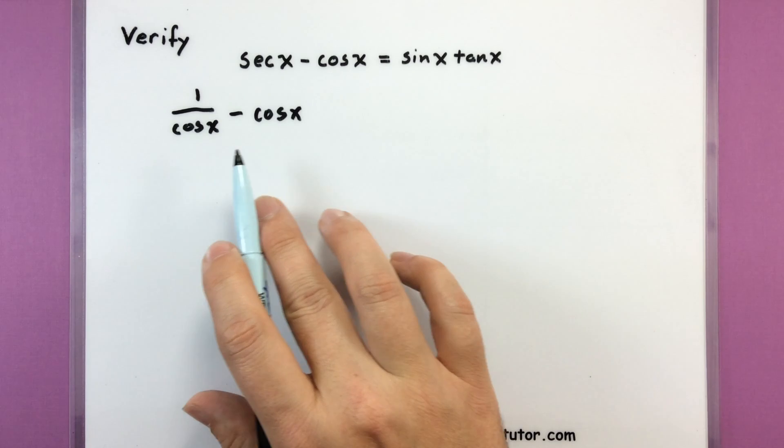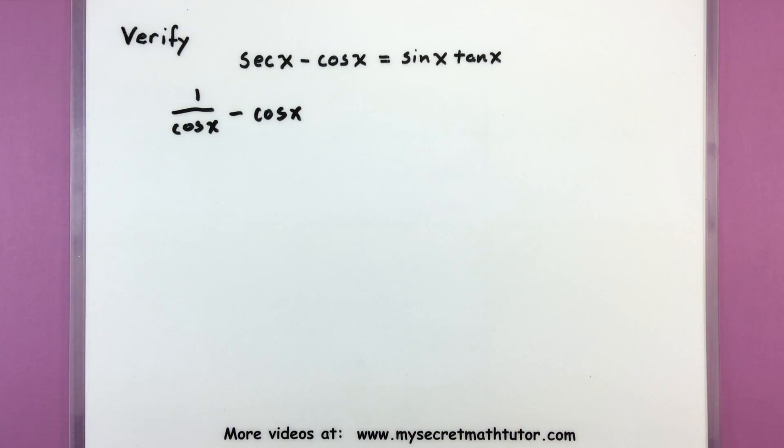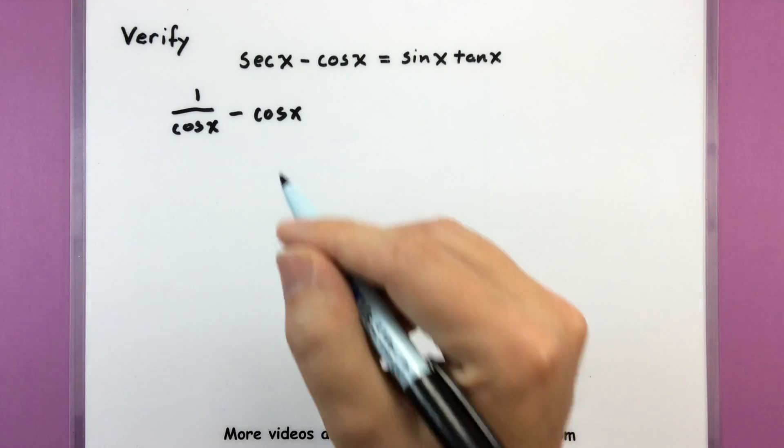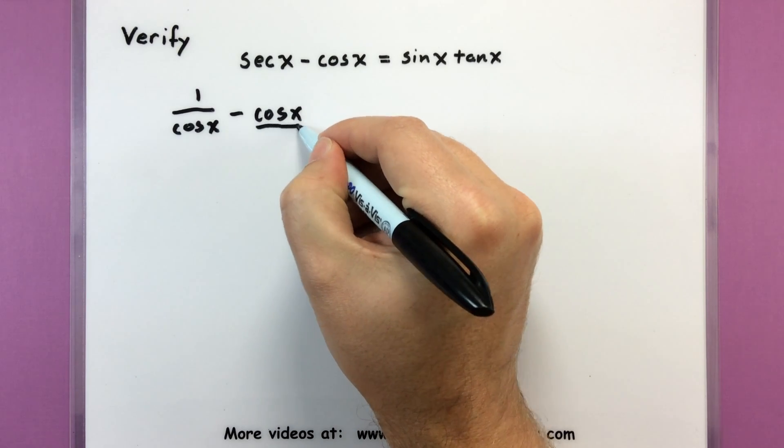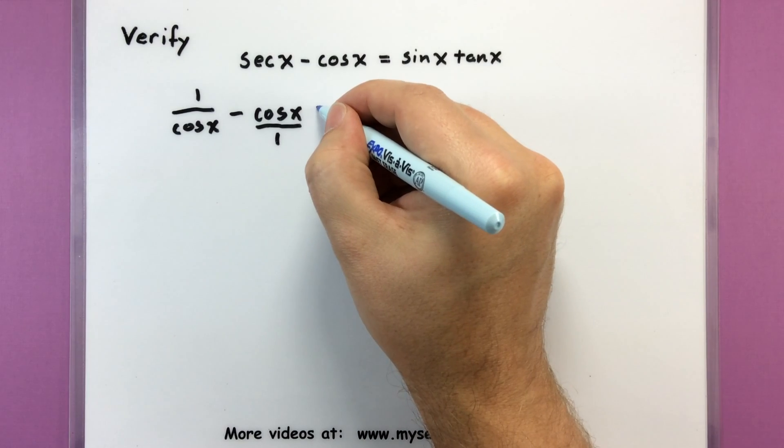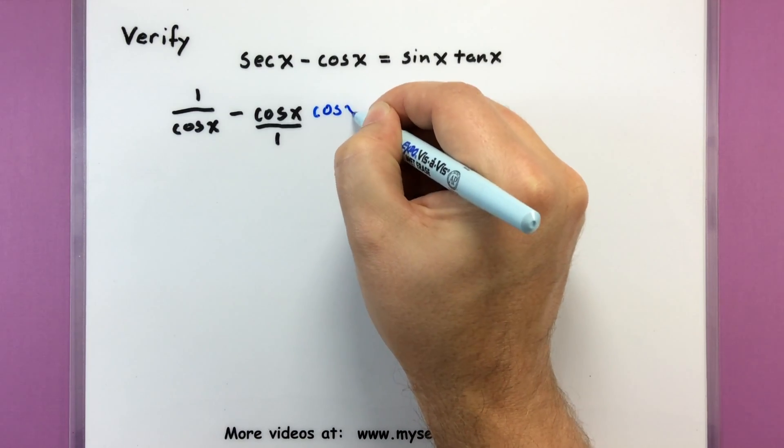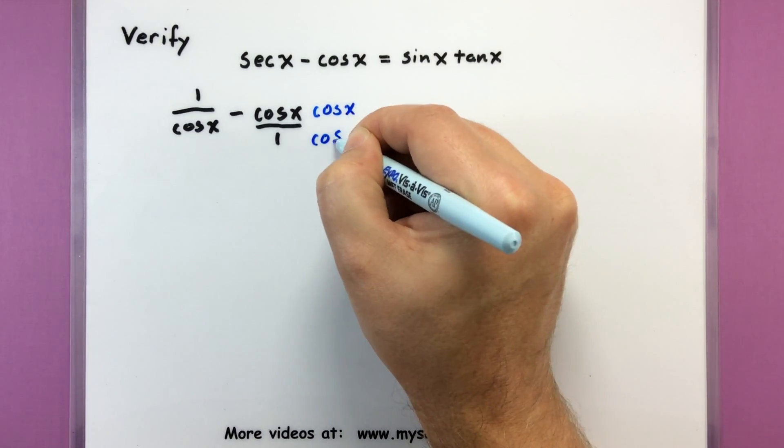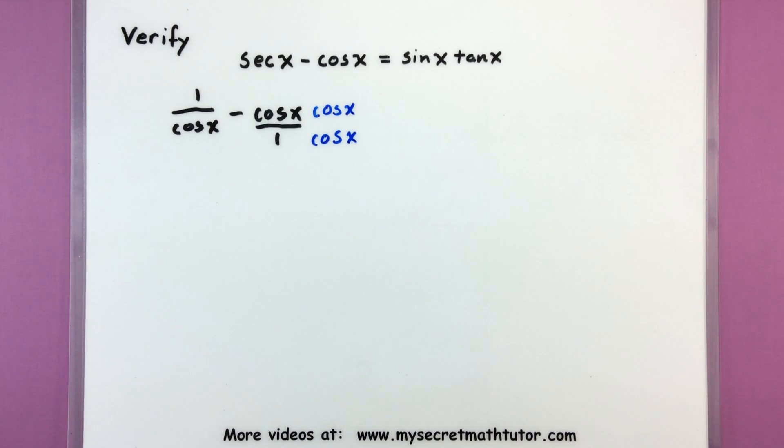Now that I have essentially a fraction I'm thinking well maybe there's a way I can combine it with the other fraction if I could get a common denominator. Let's go ahead and view this as over one and then get that common denominator by multiplying the second one on the top and bottom by cosine of x. So this is one of those situations where I'm essentially multiplying by one but I'm doing it to change how things look.